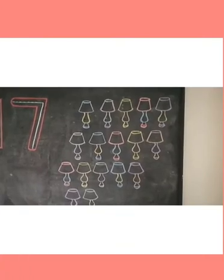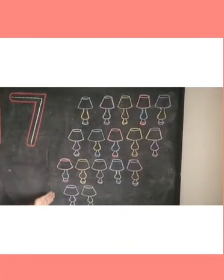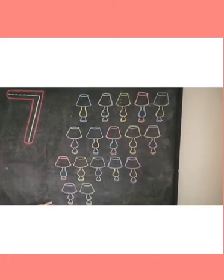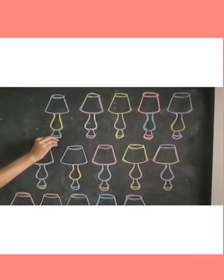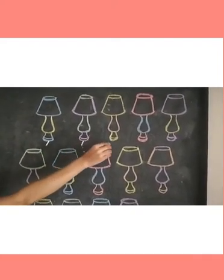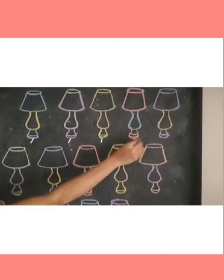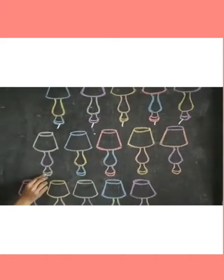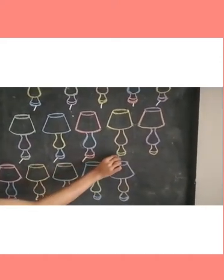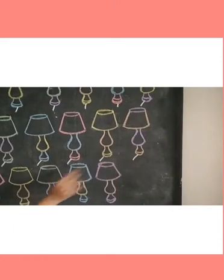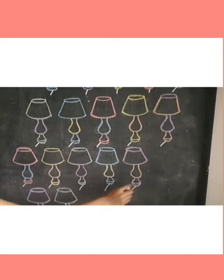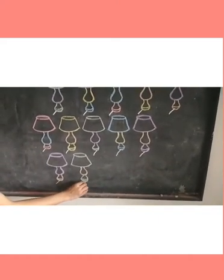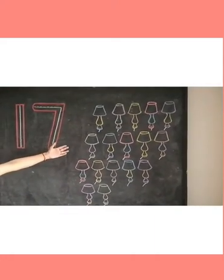See kids, what are these? These are lamps. Yes. Let's count and count. One, two, three, four, five, six, seven, eight, nine, one zero ten, one one eleven, one two twelve, one three thirteen, one four fourteen, one five fifteen, one six sixteen, and one seven seventeen. There are 17 lamps. One seven seventeen.